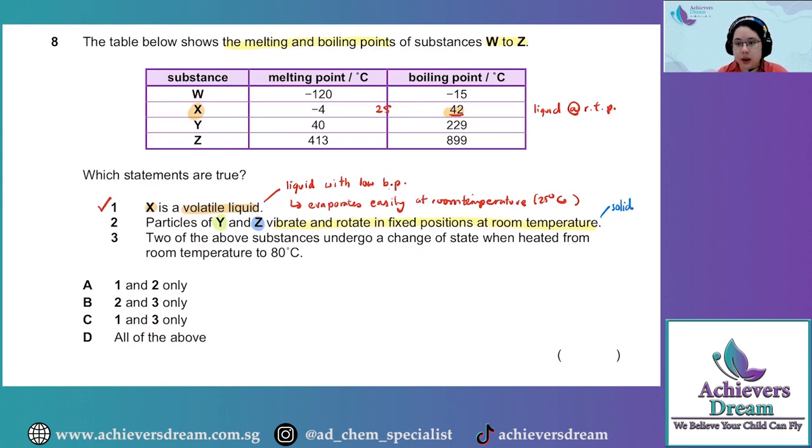At room temperature, which is around 25 degrees Celsius, Y would be a solid and Z would also be a solid. Why? Because 25 degrees Celsius is below each of their melting points. Hence, statement 2 is correct. The particles of Y and Z would be rotating and vibrating in fixed positions at room temperature.